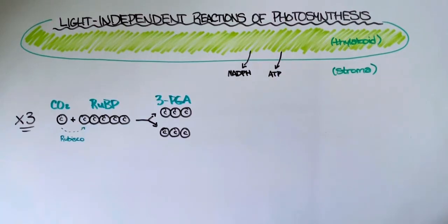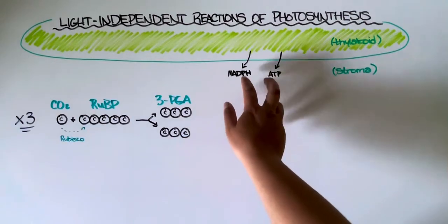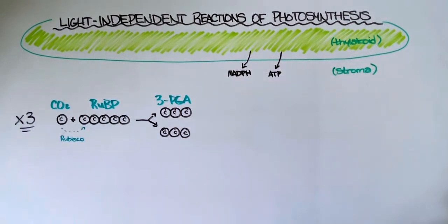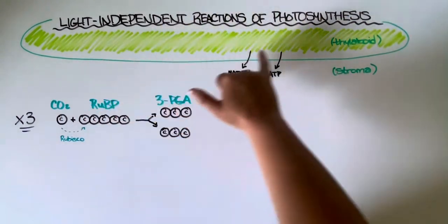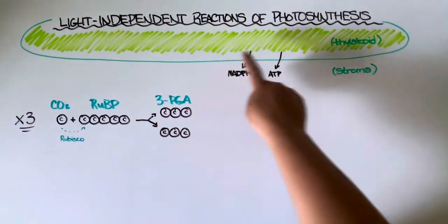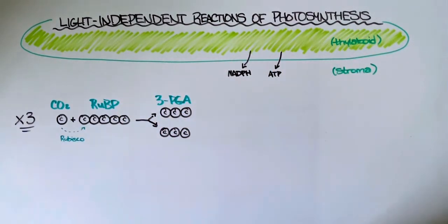If you recall from that video, the purpose of the light dependent reactions was to make these two molecules, and most of those reactions took place here inside the thylakoid as well as within proteins embedded in the thylakoid membrane.